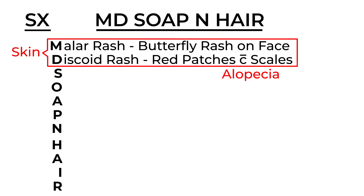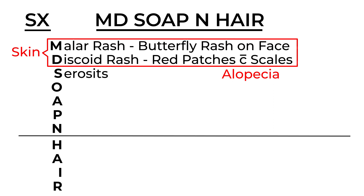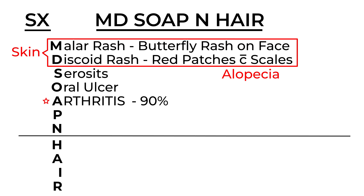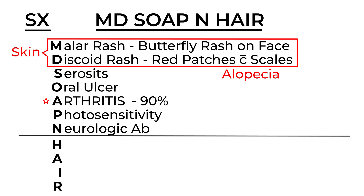The S is for serositis, the O is for oral ulcers. The A is for arthritis, which is a big one — 90% of lupus patients will have arthritis. The P is for photosensitivity, and the N is for neurologic abnormalities.